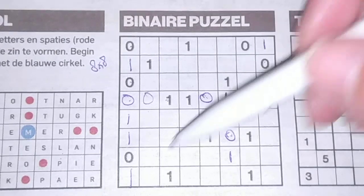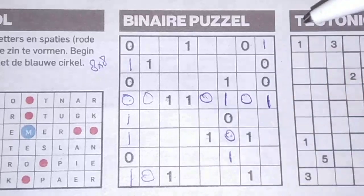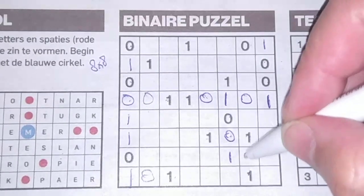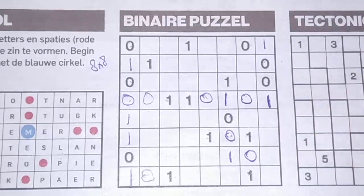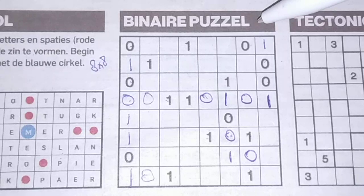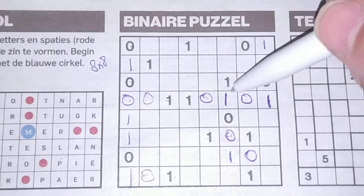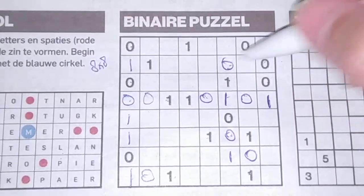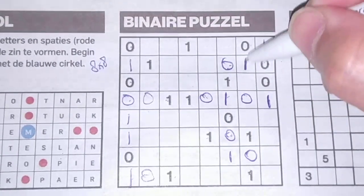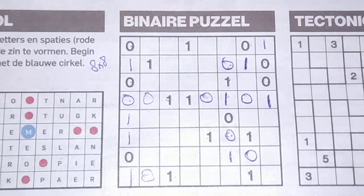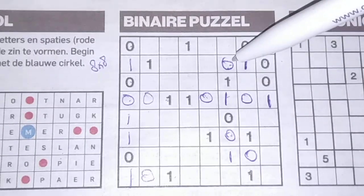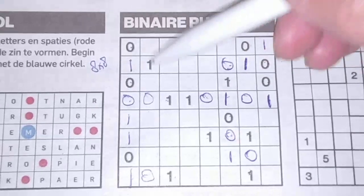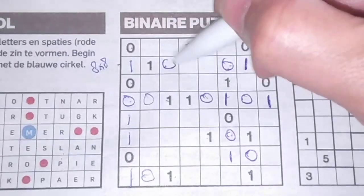Between two ones comes an O; between two ones comes an O. Double one here, an O there, an O. Between two Os comes an O. Double one here, an O there, an O.